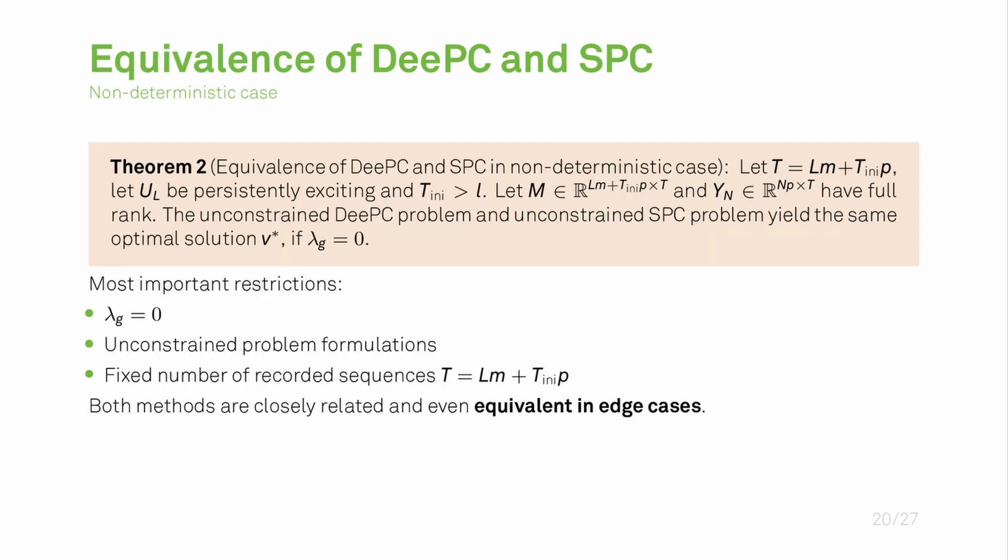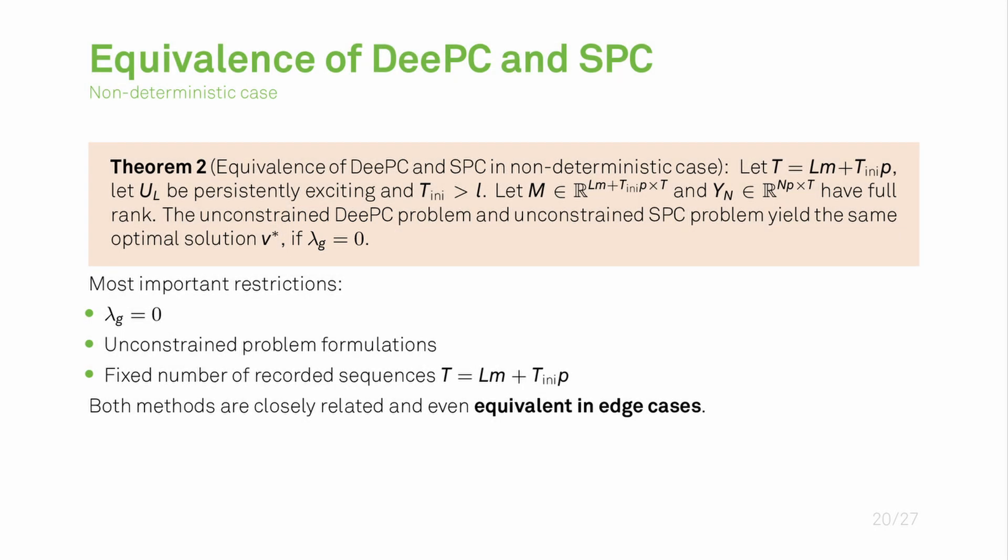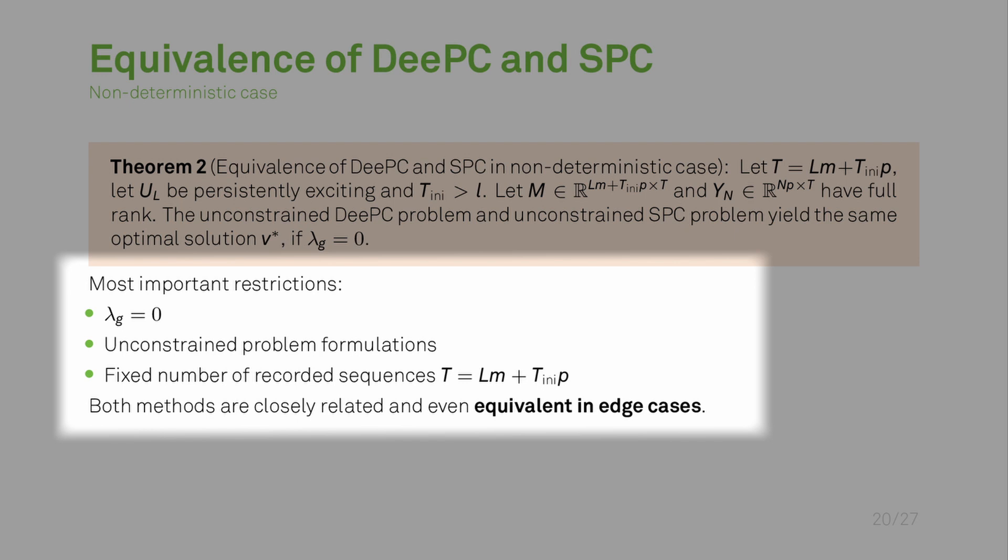Our theorem 2 is about the equivalence of DeePC and SPC in the non-deterministic case. Our theorem 2 says that if we have a fixed number of sequences and under some additional considerations, especially the restriction that lambda_g equals zero, we have that the unconstrained DeePC problem and the unconstrained SPC problem yield the same optimal solution. There are some very important restrictions here: for example lambda_g equal to zero, we have the unconstrained formulation, and we also have a fixed number of recorded sequences. But still this theorem shows that both methods are closely related in the non-deterministic setting and even equivalent in edge cases.